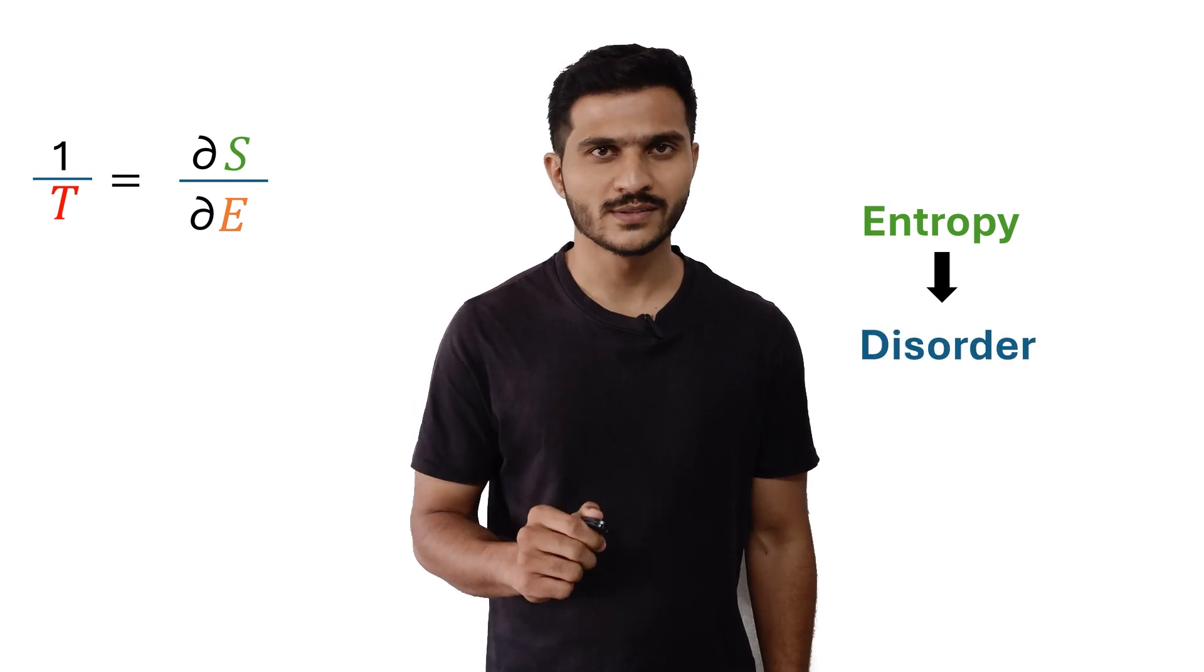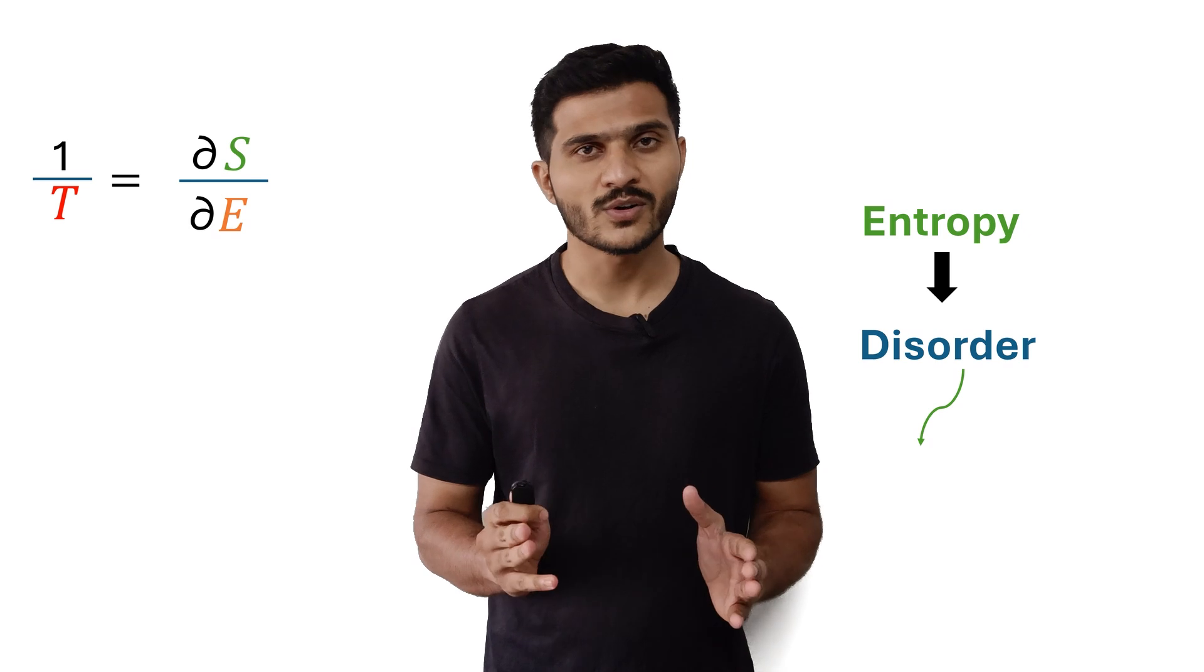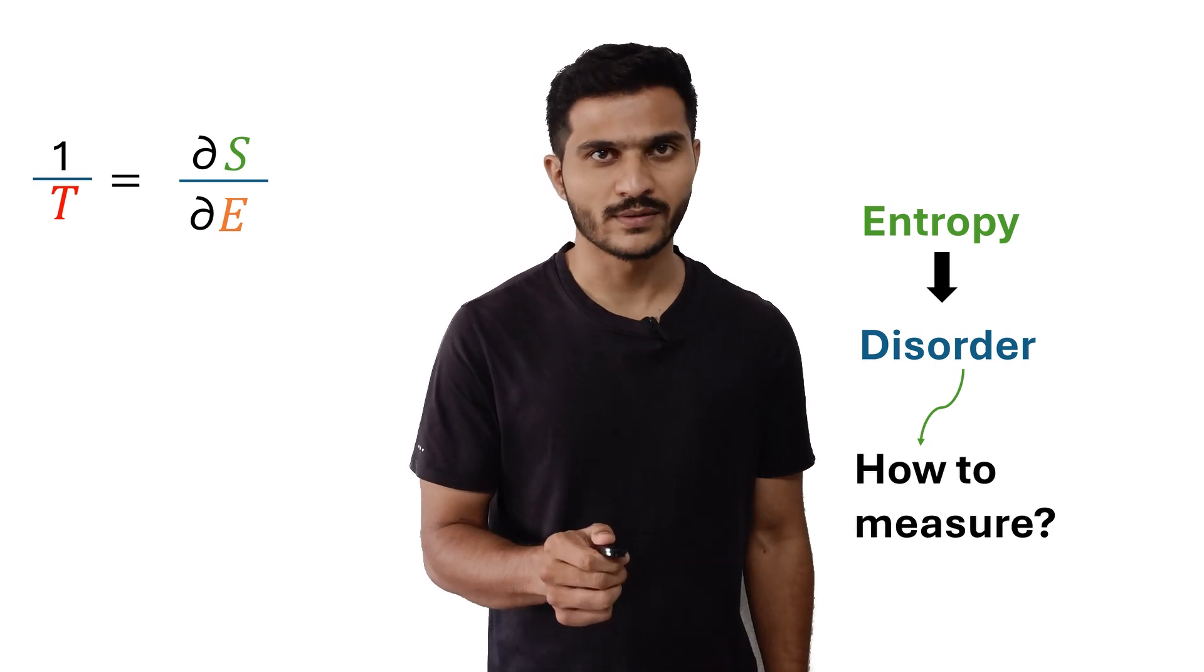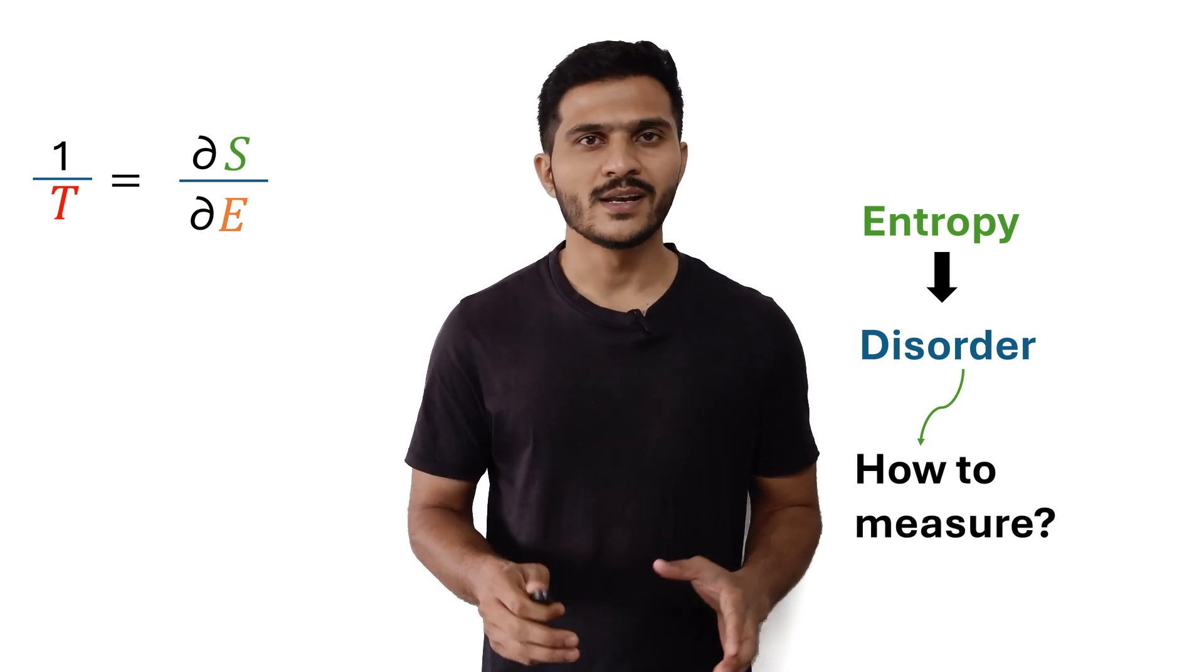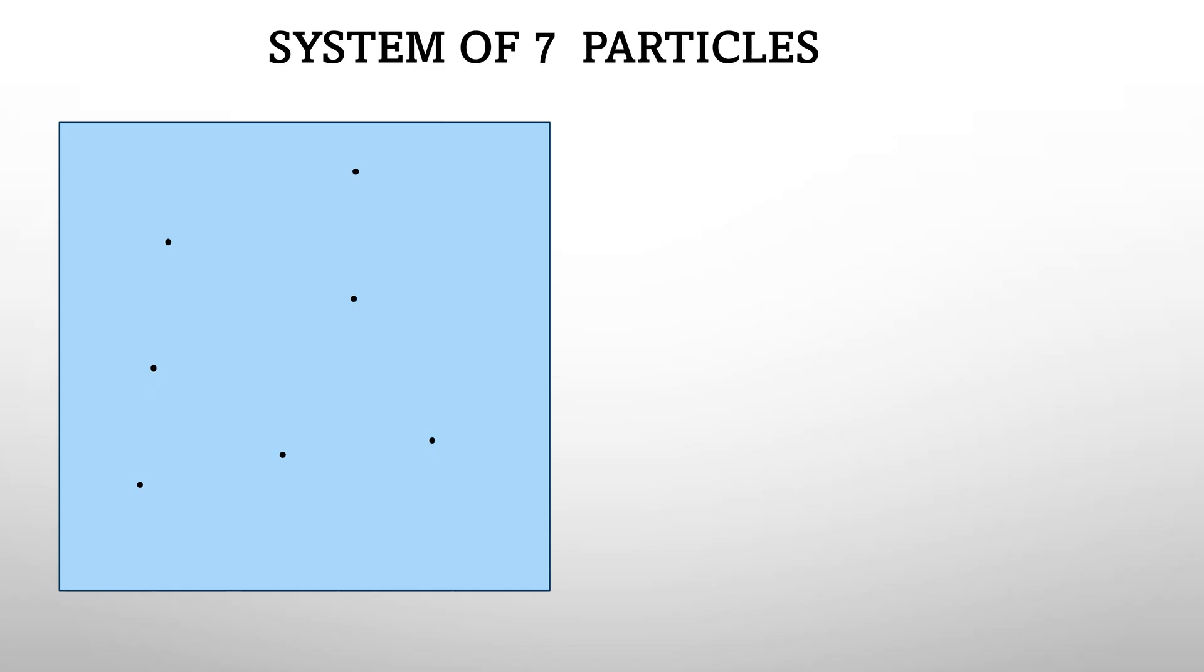Entropy is the measure of disorder in the system. I'm sure you must have heard this before, but what actually is disorder and how to measure the disorder? To answer this, let's first consider the system of seven particles. Each one of these particles have a kinetic energy due to its velocity.